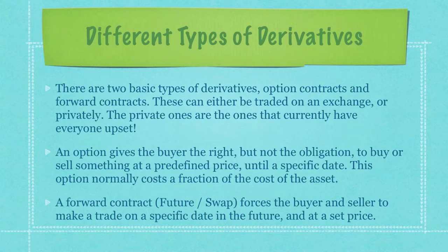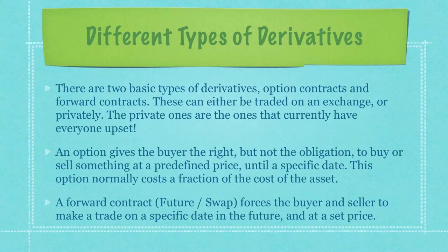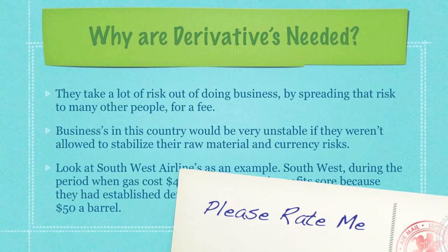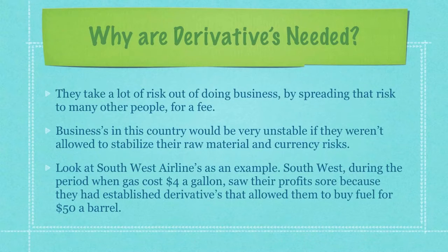These can either be traded on an exchange or privately. The private ones are the ones that currently have everyone upset. An option gives the buyer the right but not the obligation to buy or sell something at a predefined price until a specific date, and normally costs a fraction of the cost of the asset. A forward contract or future swap forces the buyer and seller to make a trade on a specific date in the future at a set price. Derivatives take a lot of risk out of doing business by spreading that risk to many other people for a fee. Businesses would be very unstable if they weren't allowed to stabilize their raw material and currency risks with derivatives.